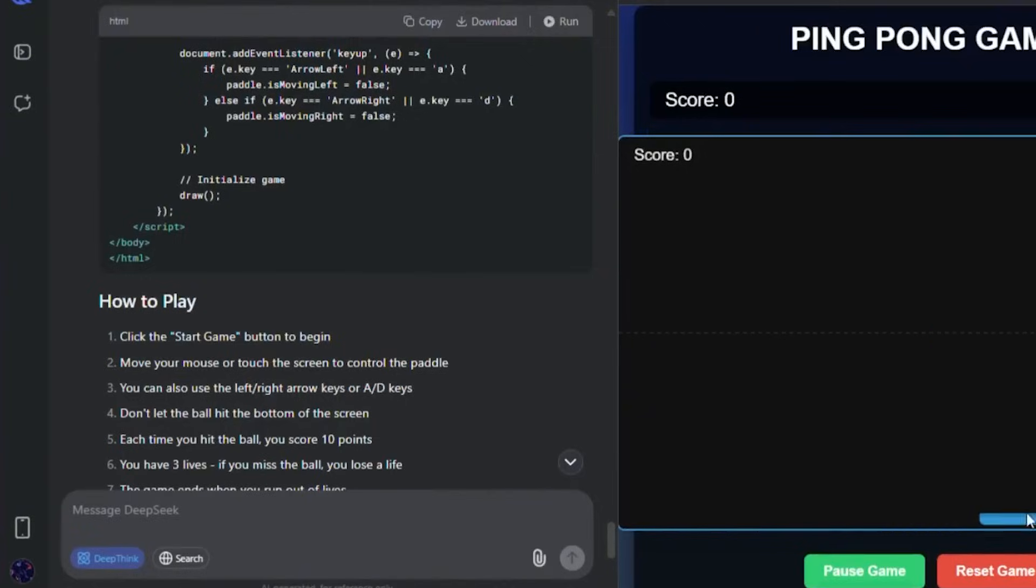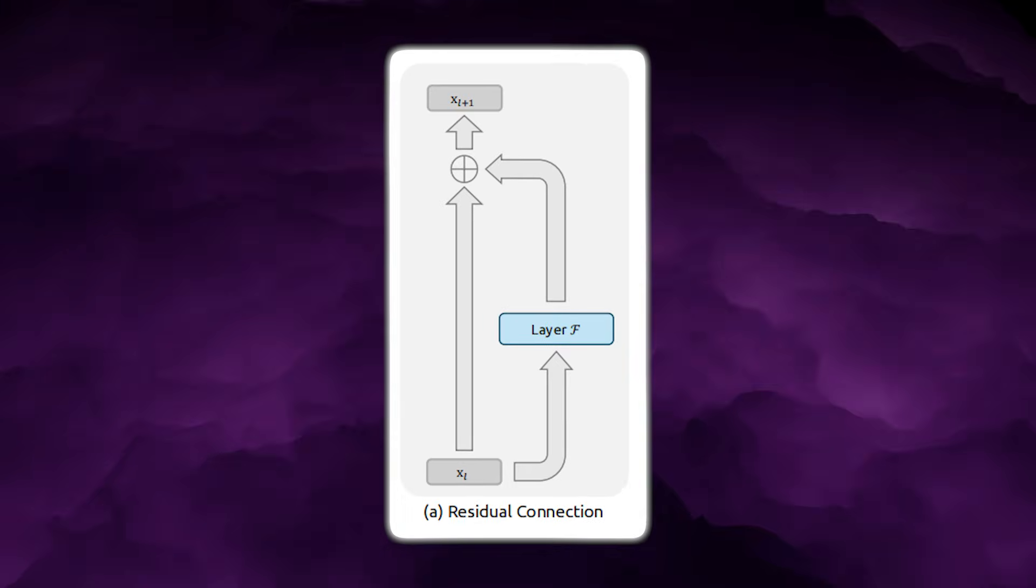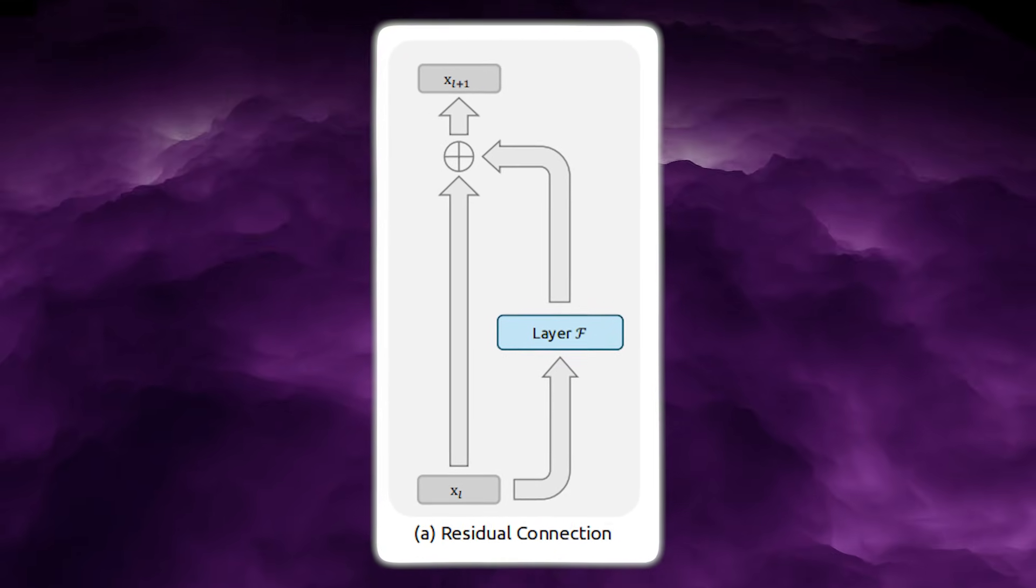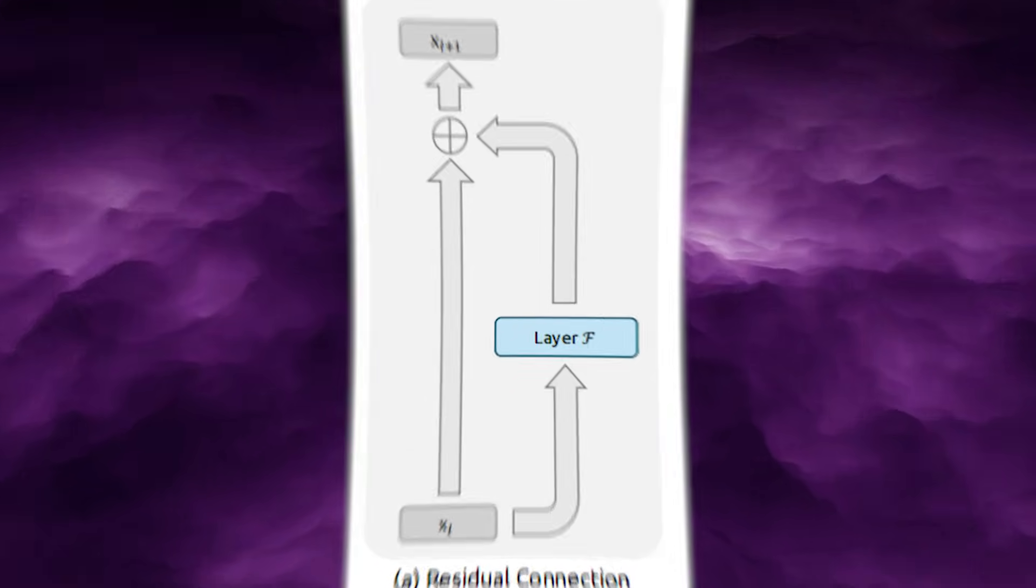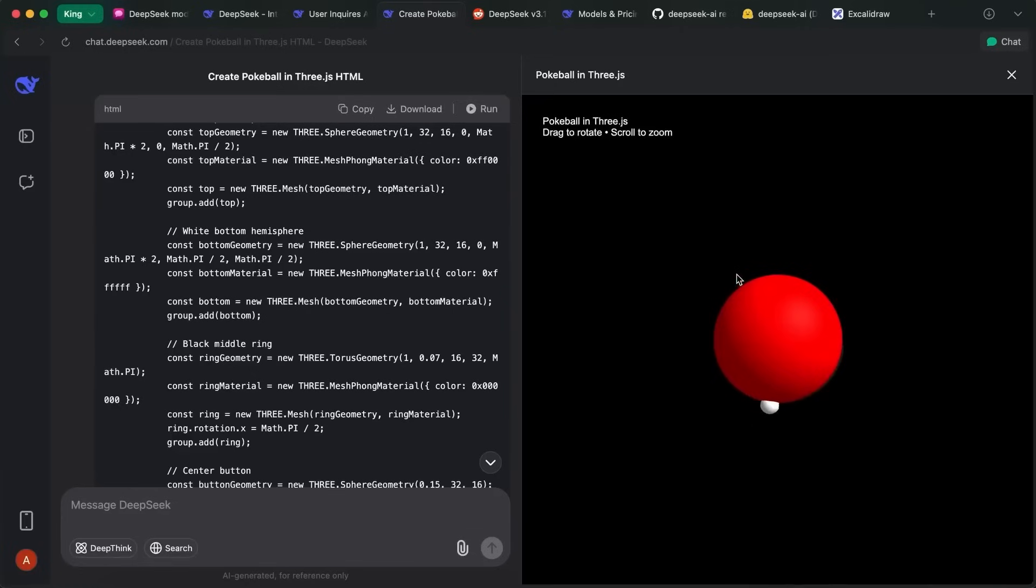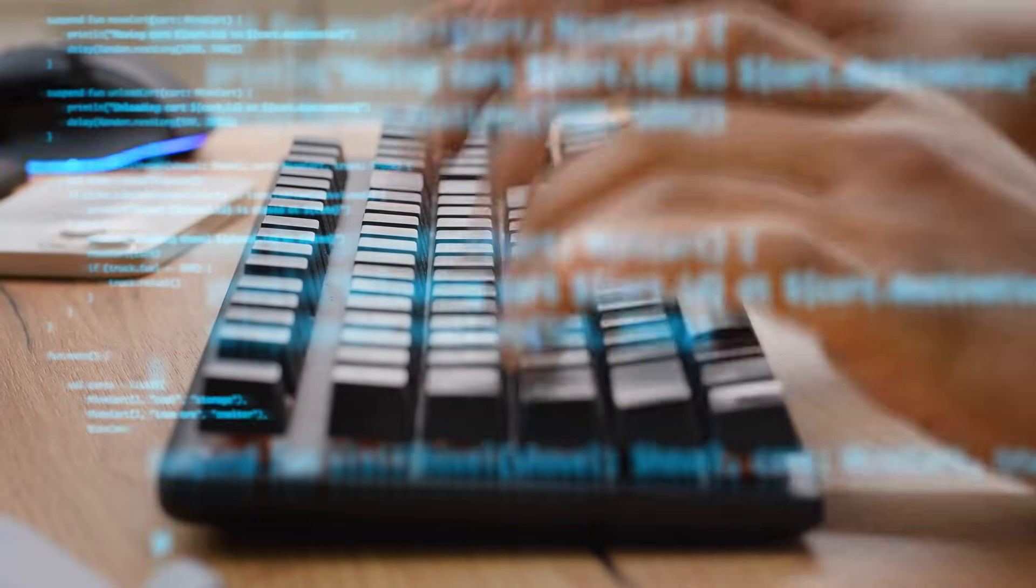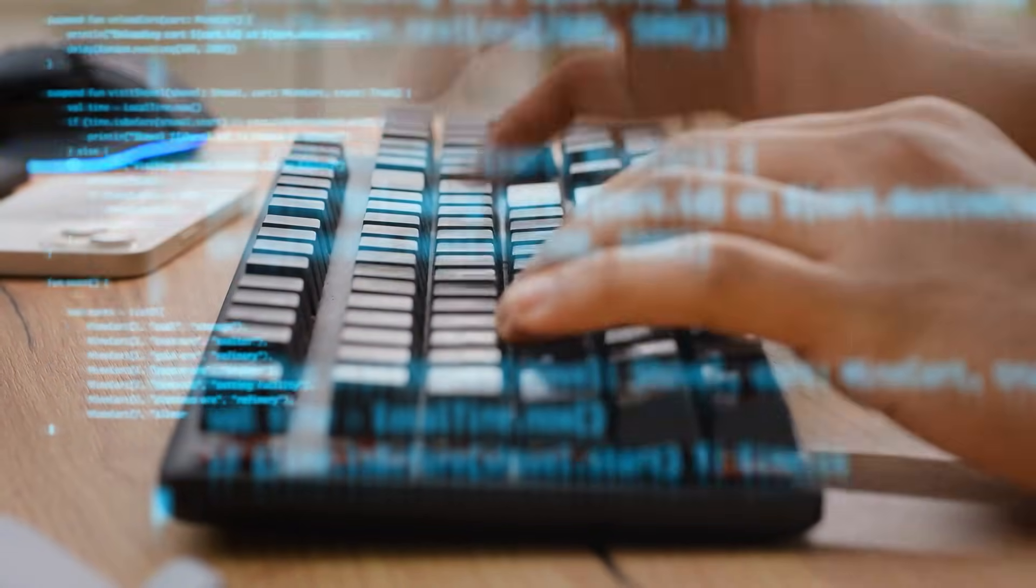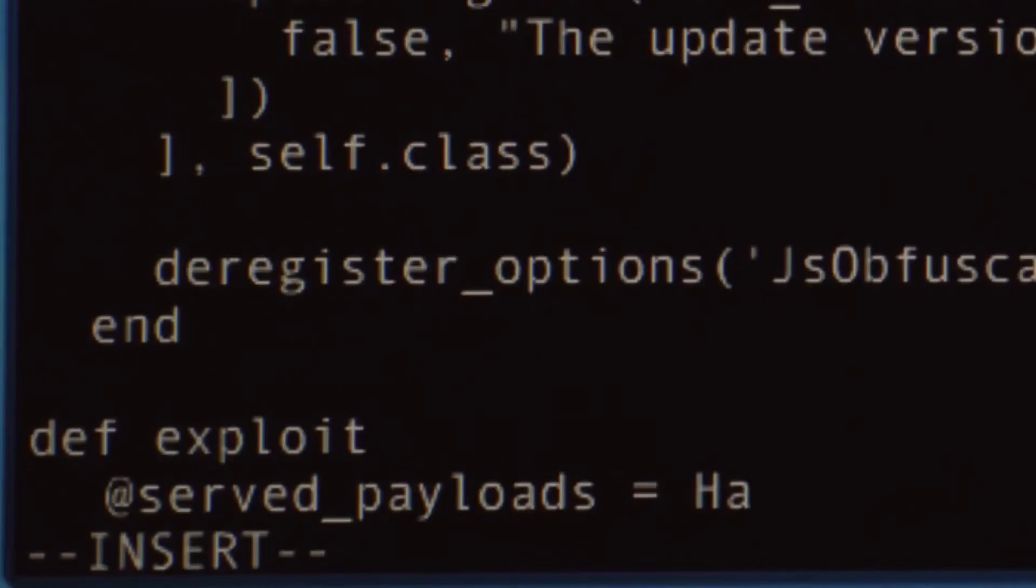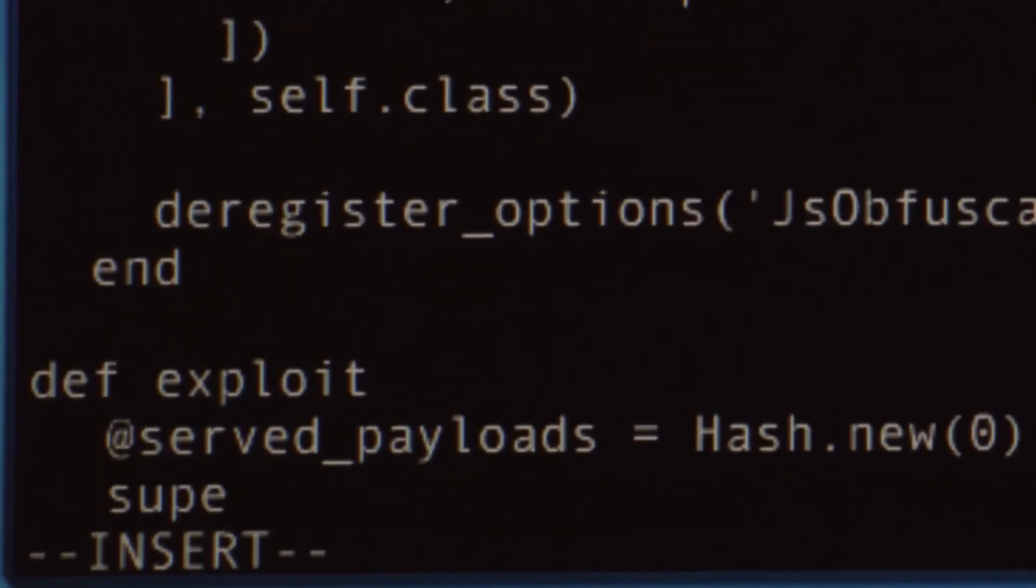For 10 years, transformers have leaned on a very simple stability trick, residual connections. Each layer takes an input, does some math, and adds the original input back to the result. It's the identity path that guarantees the model can grow deeper without gradients exploding or vanishing. Think of it like a straight bridge around every layer, a shortcut that ensures information keeps moving forward even if the main path gets noisy or tangled.